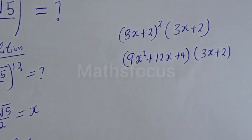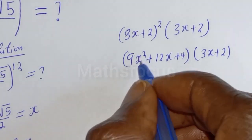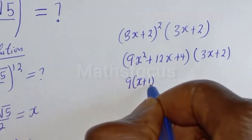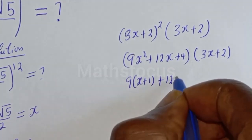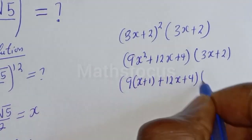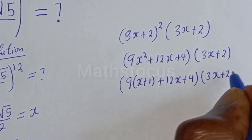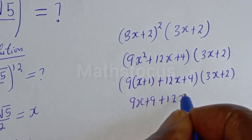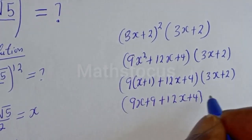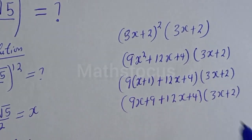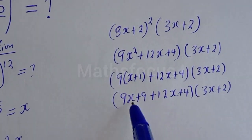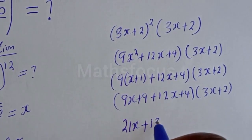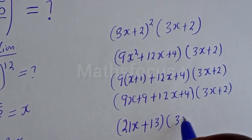Now let's expand (3X plus 2) to the power of 3. Since X squared equals X plus 1, we get 9 times (X plus 1) plus 12X plus 4, multiplied by (3X plus 2). This gives 9X plus 9 plus 12X plus 4, multiplied by (3X plus 2), which simplifies to 21X plus 13, multiplied by (3X plus 2).